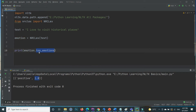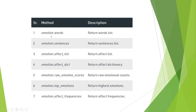From the emotions object we can get several outputs: emotion.words returns the words, emotion.sentence returns the sentence, emotion.affect_list returns the affective list, emotion.raw_emotion_scores returns the raw emotion count, and emotion.top_emotions returns the highest emotion. emotion.affect_frequencies returns the affective frequency.